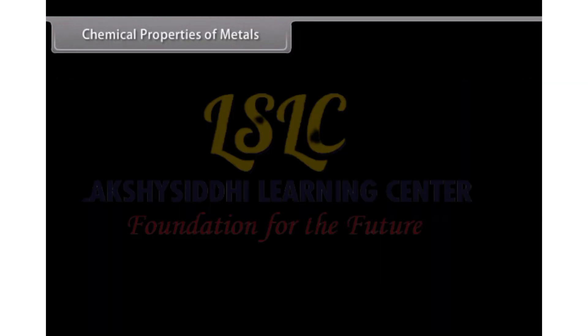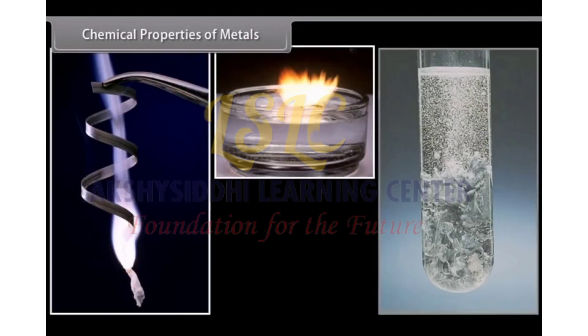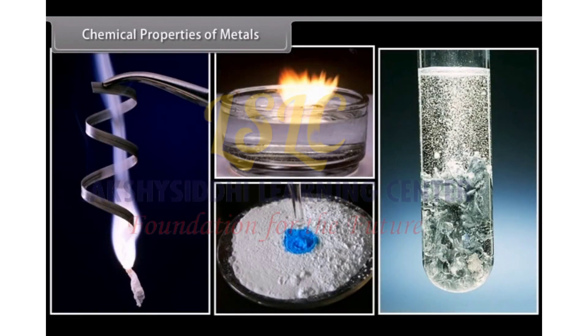Chemical properties of metals: Metals. Let us look at some chemical properties of metals. These properties include reactions of metals with other elements, that is, air, water,